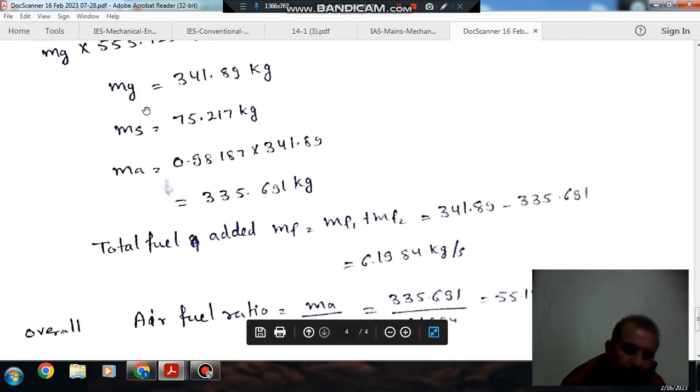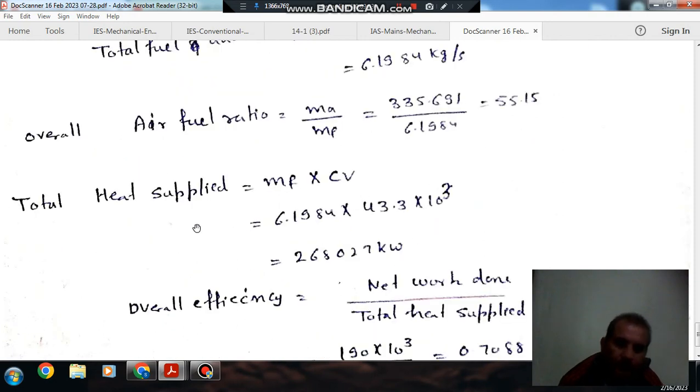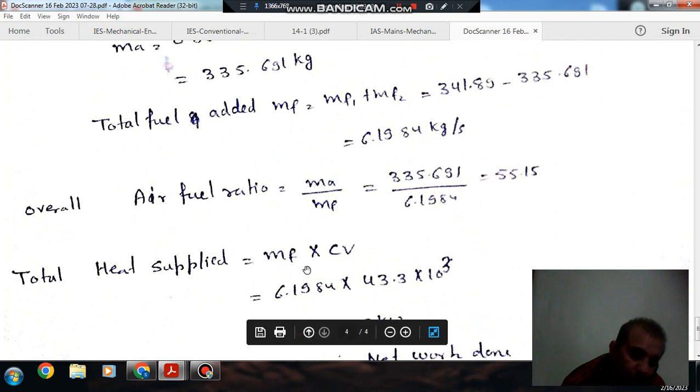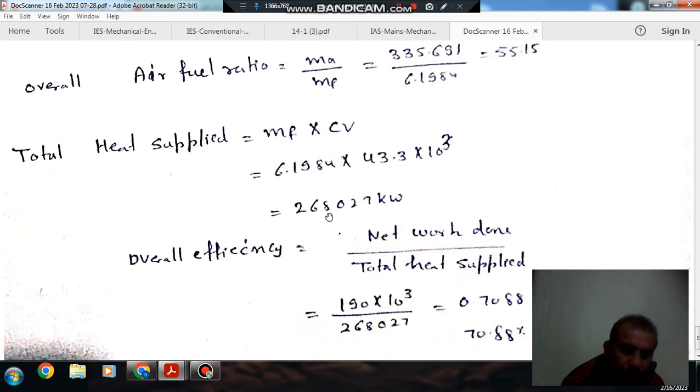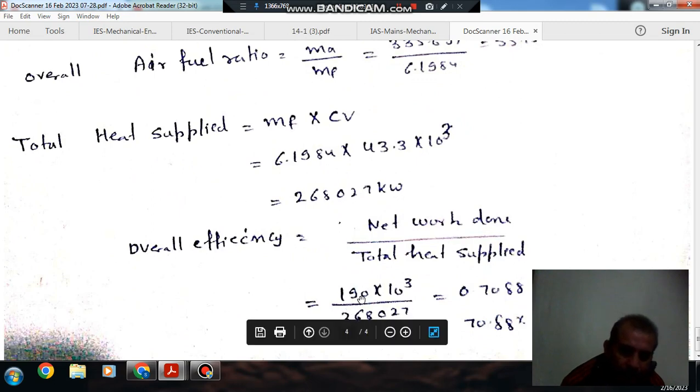Now the total fuel added Mf = Mg - Ma. So this is the final mass of the gases and this is the air. So this is the fuel added. So the air fuel ratio is Ma/Mf. So that is 50.5 to 1. And heat supplied is total mass of fuel times CV. So we can find out total heat supplied = 268,027 kW. So the power output is 190 MW. So the efficiency is 70.8%.